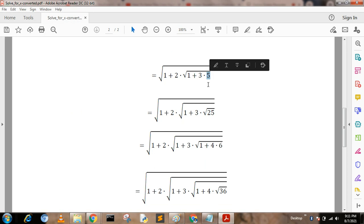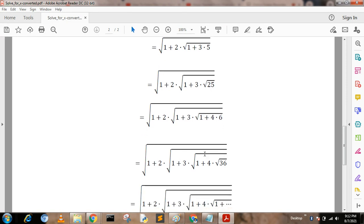And 5 means again root over 25, that is the equation becomes root over 1 plus 2 dot root over 1 plus 3 dot root over 25. Again, 25 means 1 plus 4 times 6, so our equation becomes root over 1 plus 2 dot root over 1 plus 3 dot root over 1 plus 4 times 6.